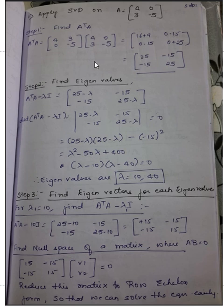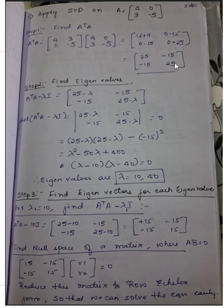For this matrix A transpose A, we form a characteristic equation: A transpose A minus lambda I. A transpose A is this, minus lambda times I. I is the identity matrix — in this case, the 2×2 identity matrix with values 1, 0, 0, 1. If you multiply with lambda and subtract, you get A transpose A minus lambda I.